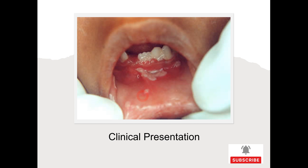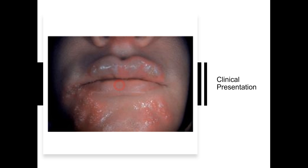Here is a clinical presentation of a patient suffering from acute herpetic gingivostomatitis. You can appreciate vesicles around the lips and the inner surface of the lips, enlarged vesicles around the gingiva, inflamed and enlarged gingiva, and ulcers on the buccal surface. In the second picture, the vesicles and ulcers are more predominantly present on the chin area. Along with oral lesions, these vesicles can also occur on the face and lips.